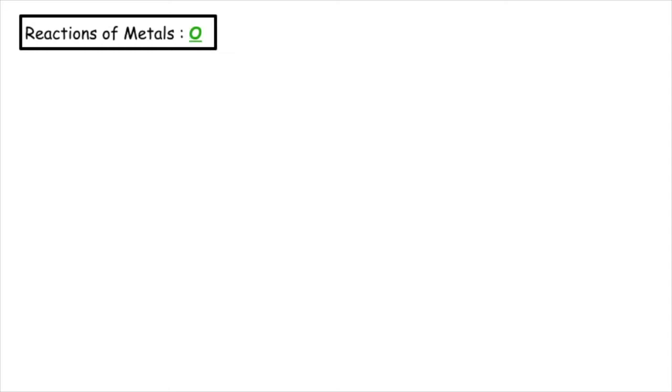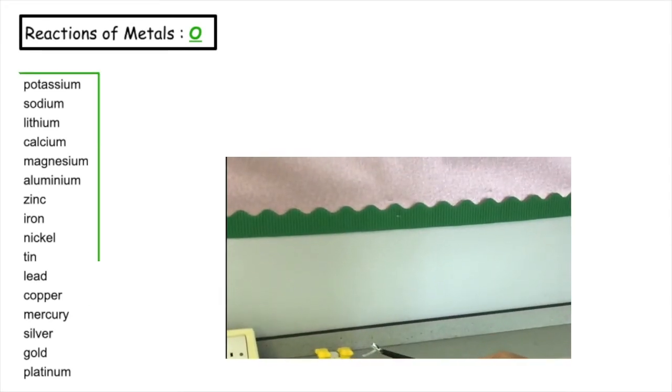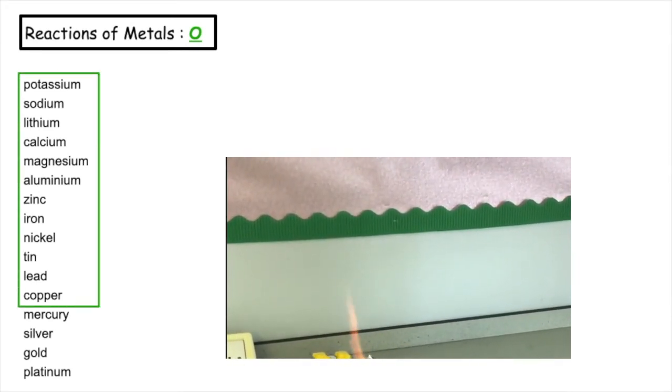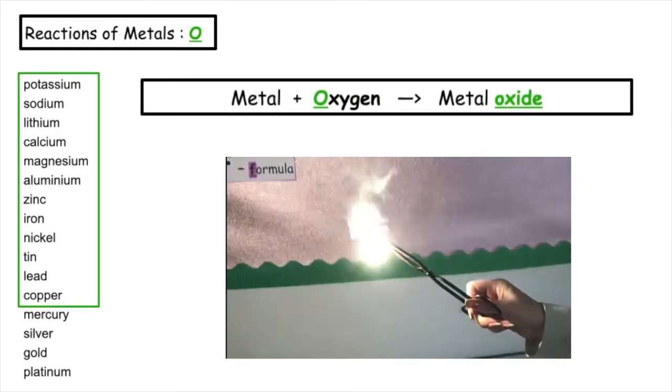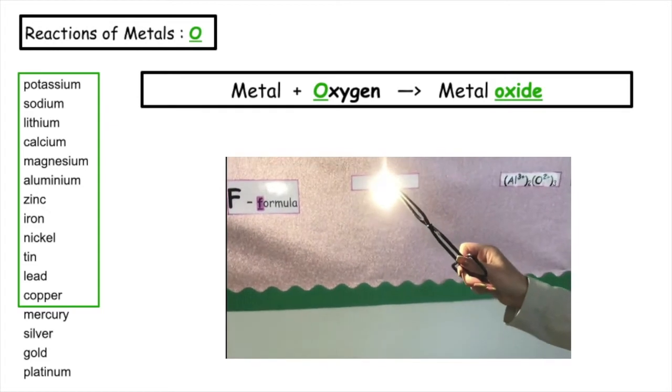The reactivity series is a list of metals starting with the most reactive to the least reactive. Copper and above in the reactivity series can react with oxygen to form a metal oxide.